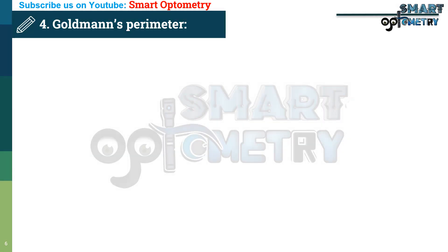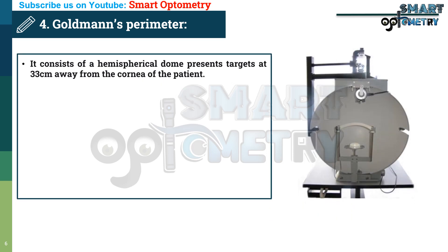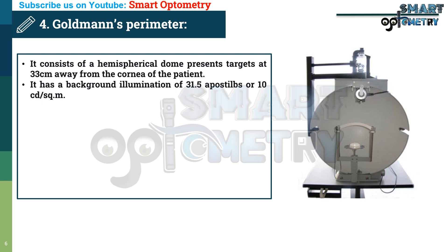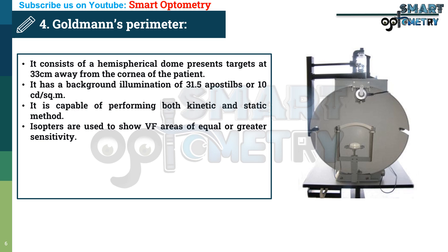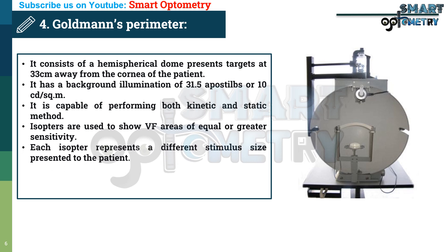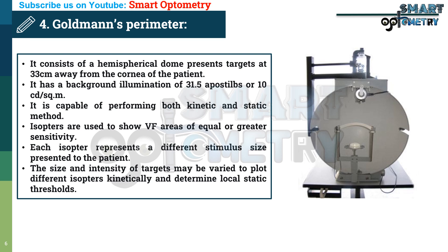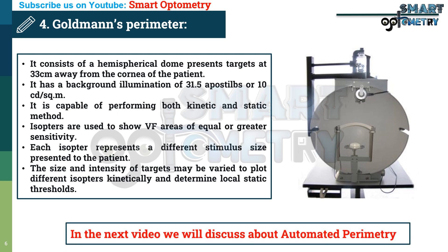Now, Goldman's Perimeter. It consists of a hemispherical dome and presents a target at 33 cm away from the cornea of the patient. It has a background illumination of 31.5 apostilbs or 10 candelas per square meter. It is capable of performing both kinetic and static methods. Isopters are used to show visual field areas of equal and greater sensitivity. Each isopter represents a different stimulus size presented to the patient. The size and intensity of the target may be varied to plot different isopters kinetically and determine local static threshold.